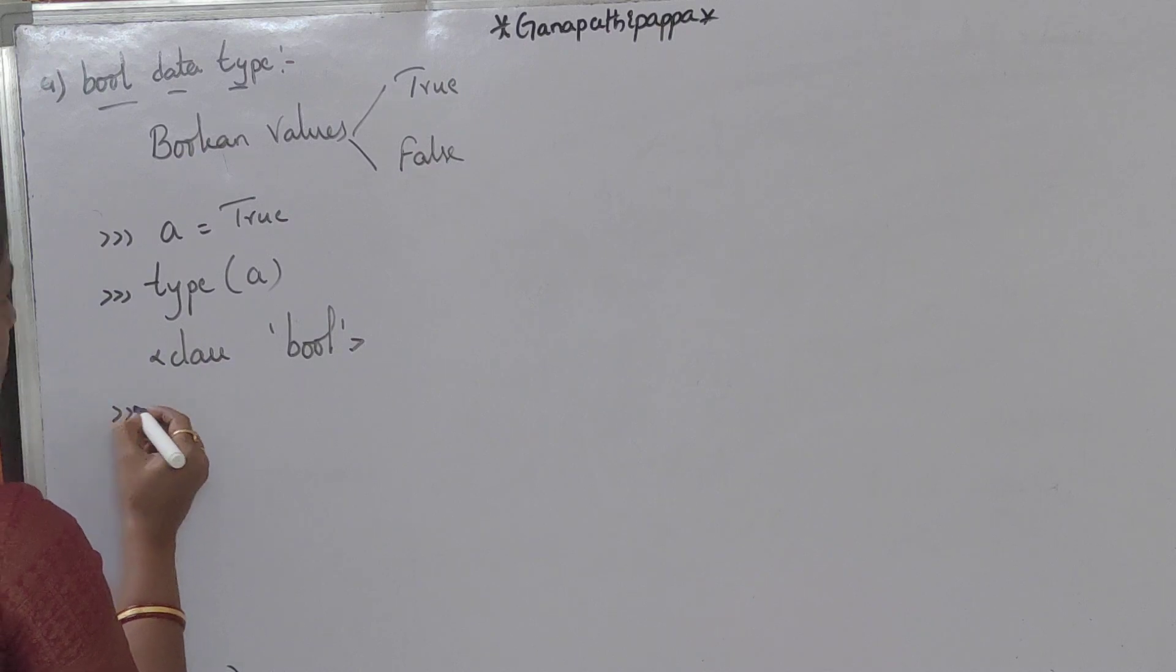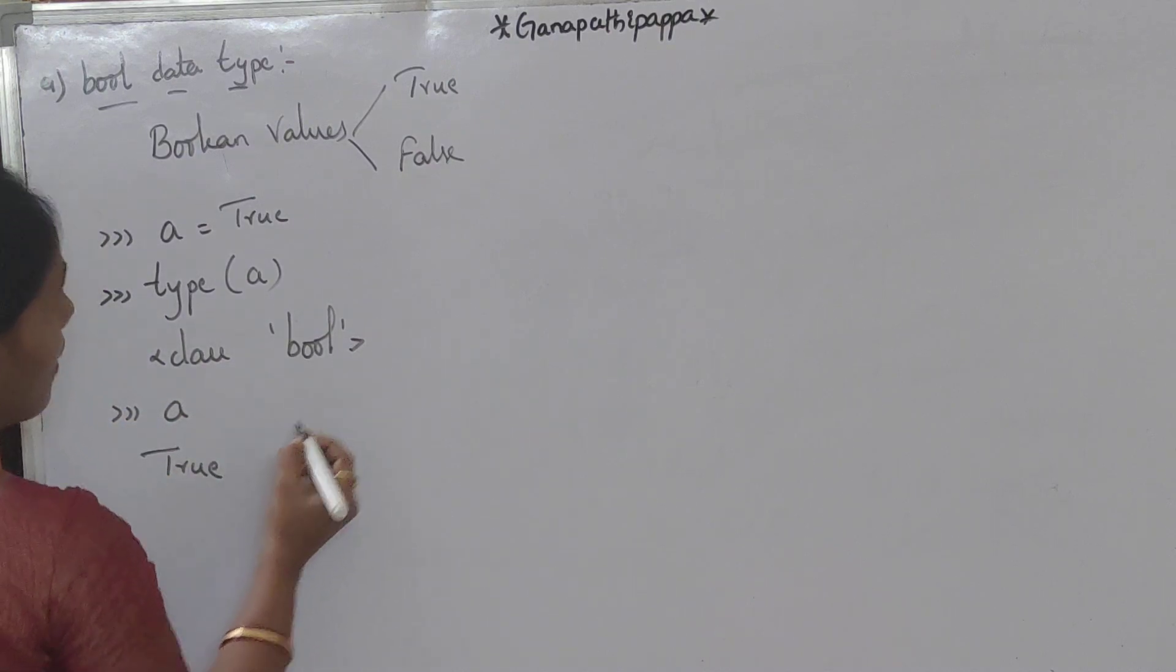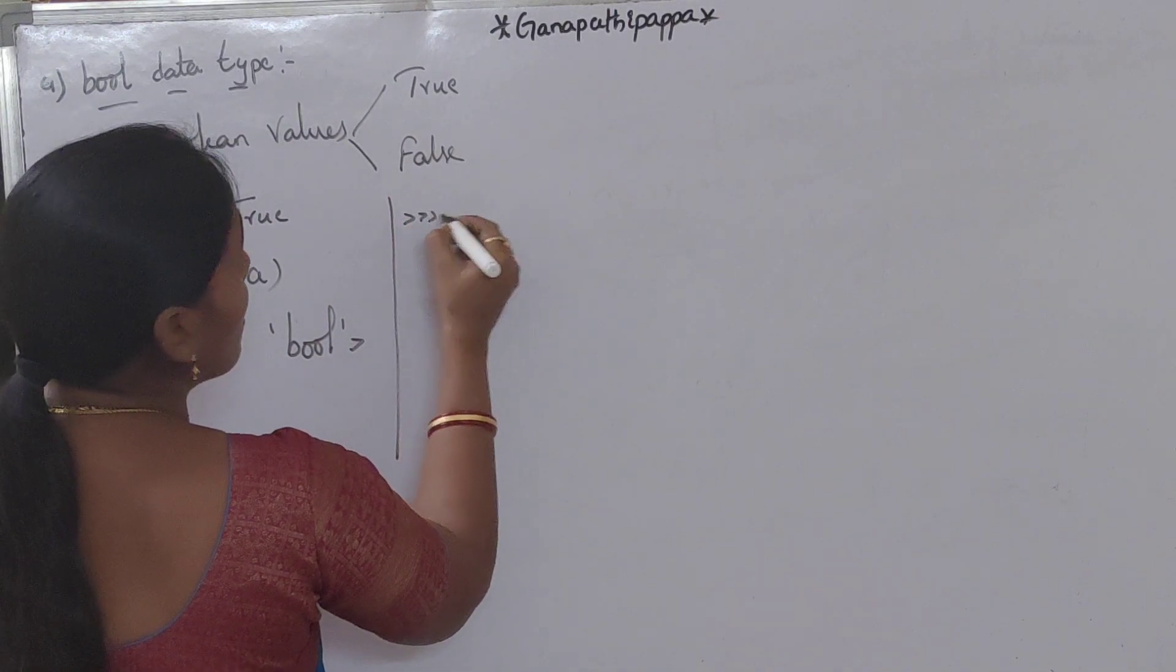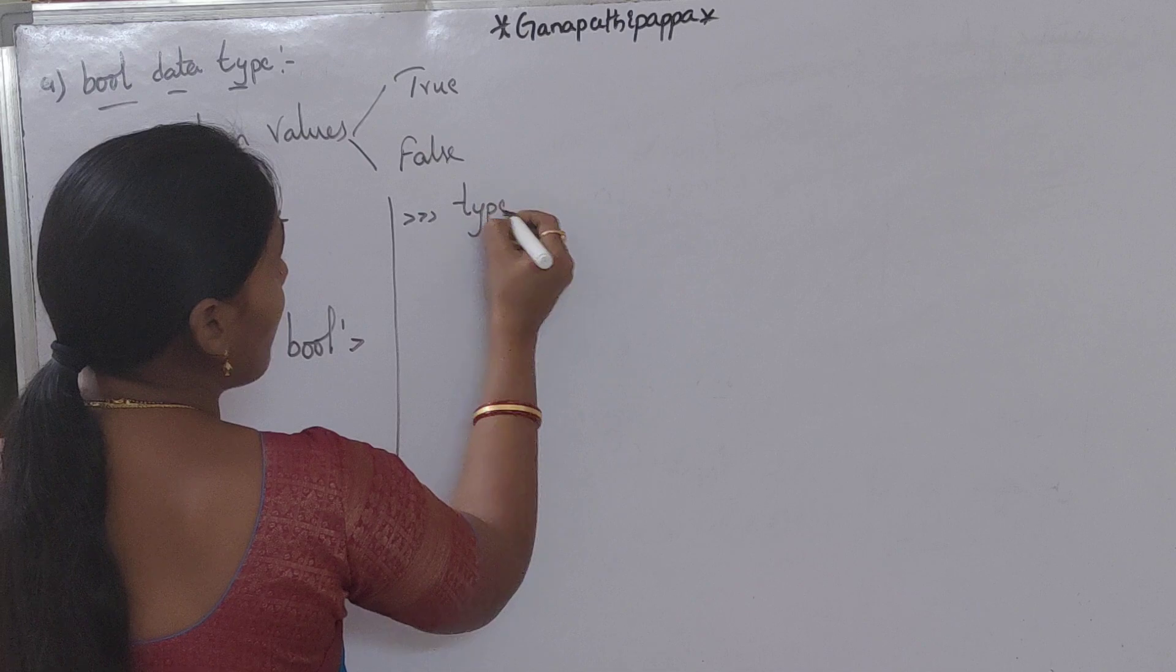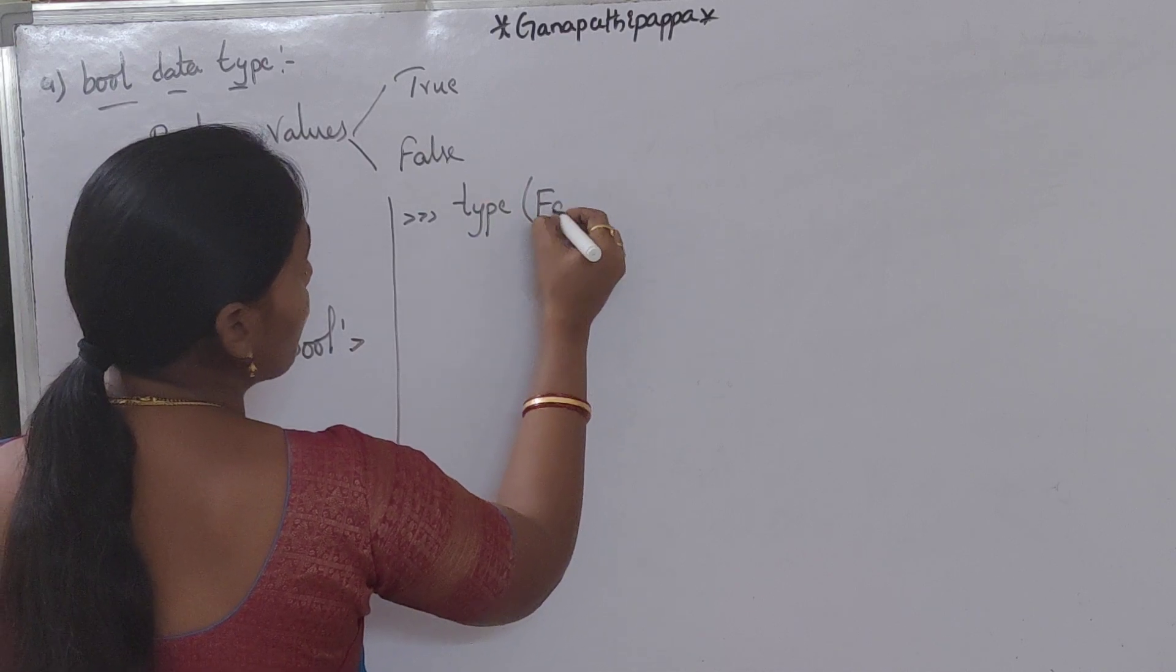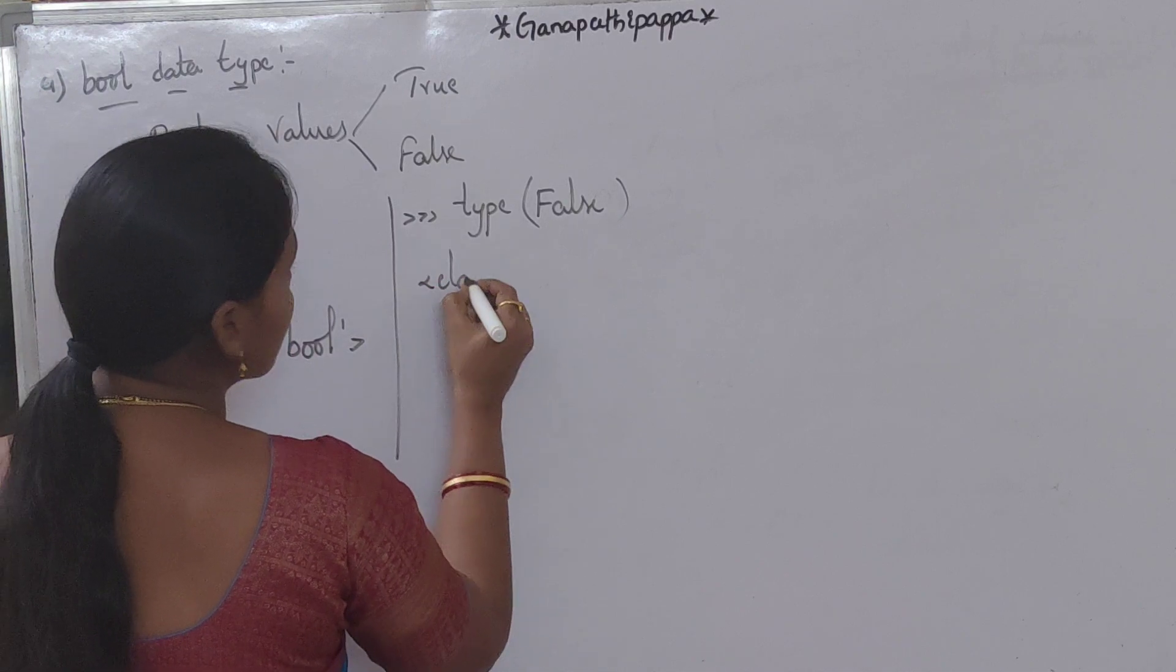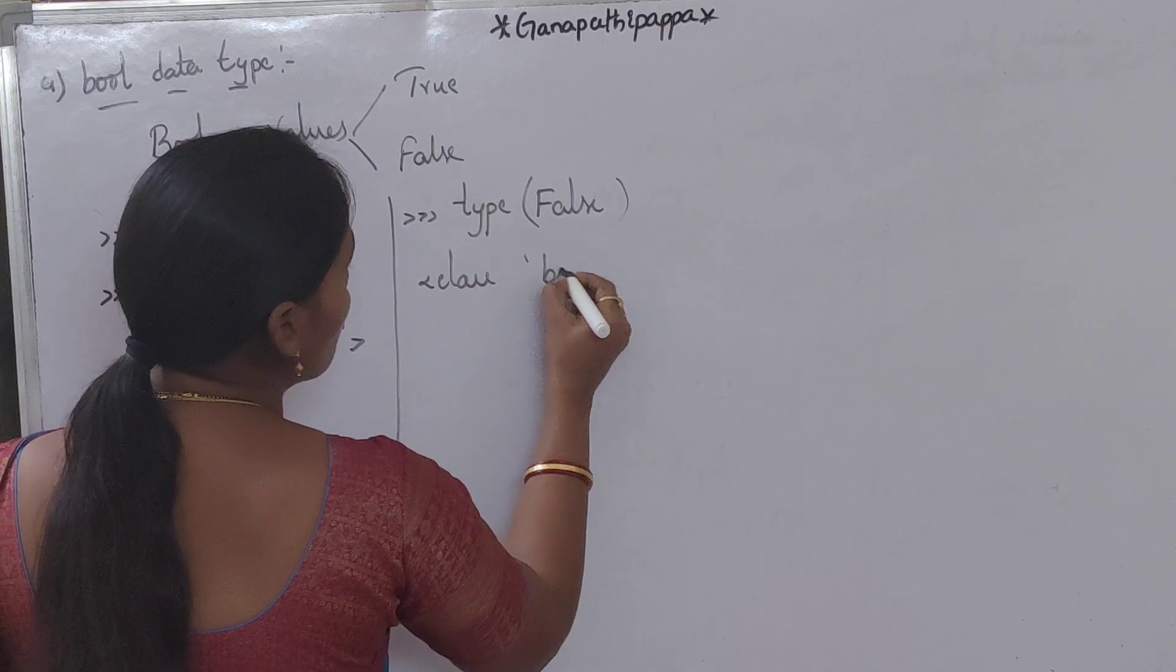And next, print the boolean value true. And next, false also. We will take the value directly inside a type function: false. Immediately, we will get class bool.